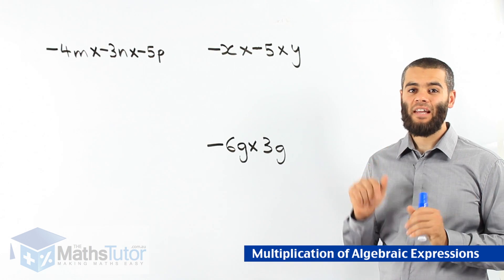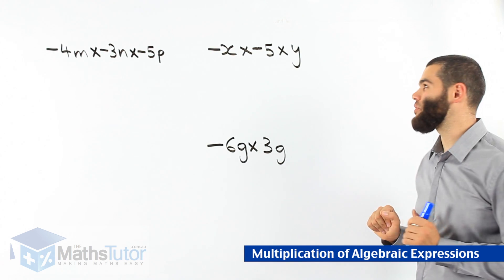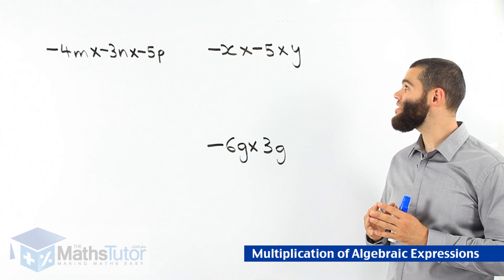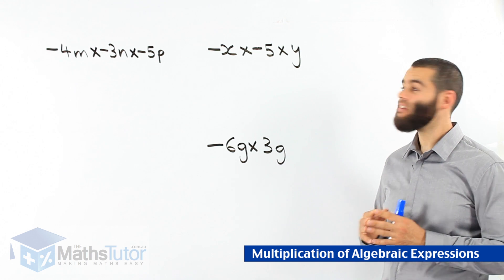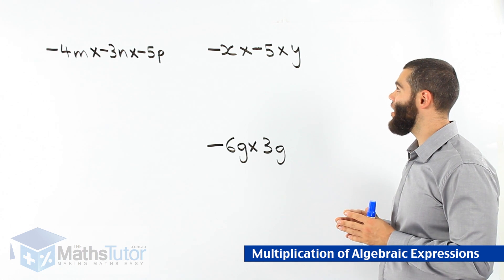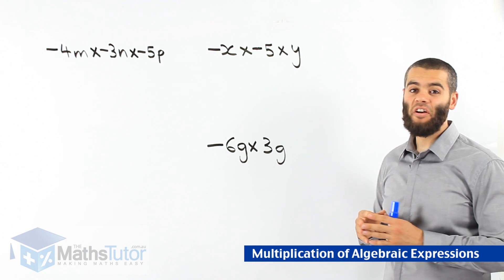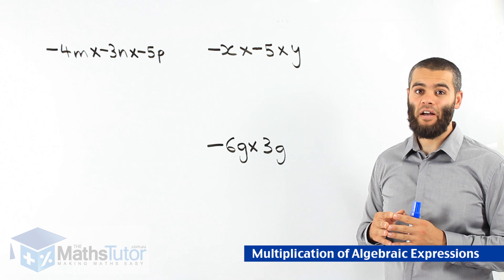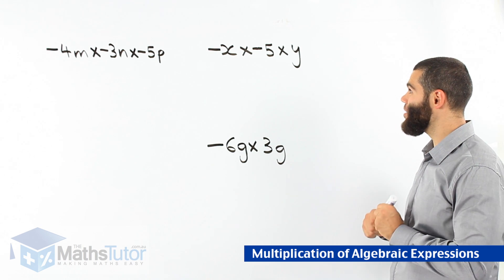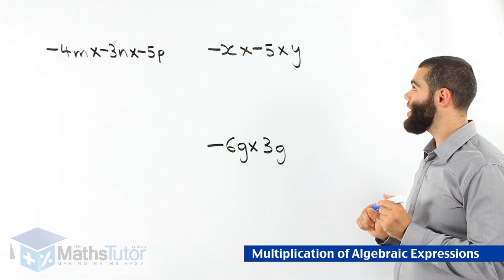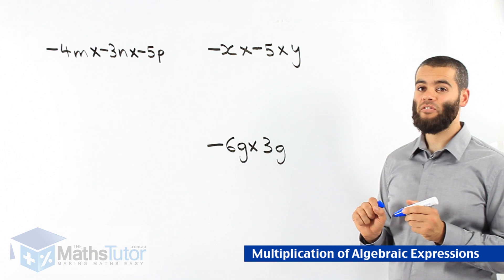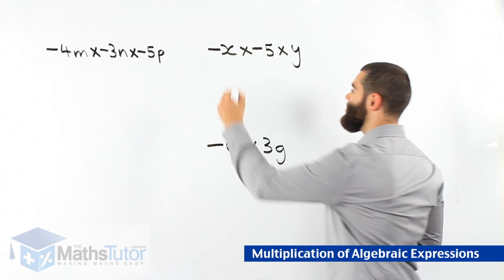Okay, last three examples. We have negative x times negative 5 times y. The same rules apply: negative x times negative 5 times y.